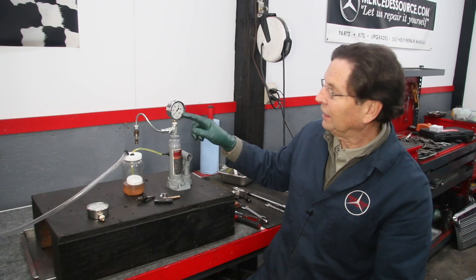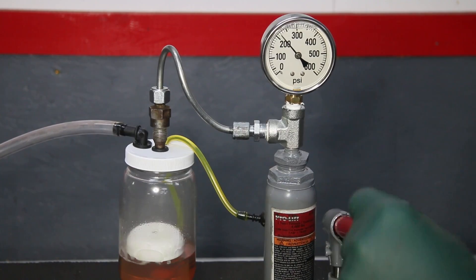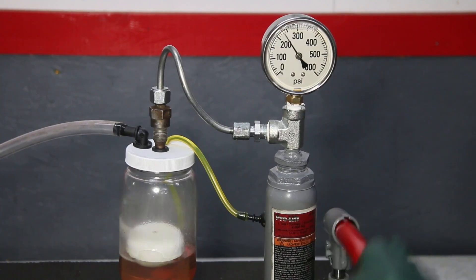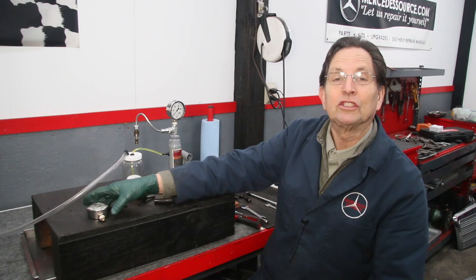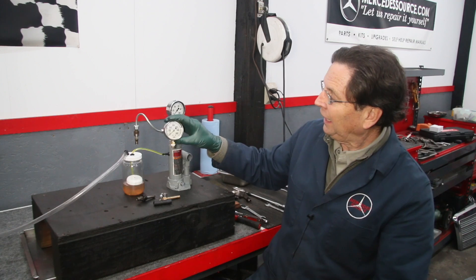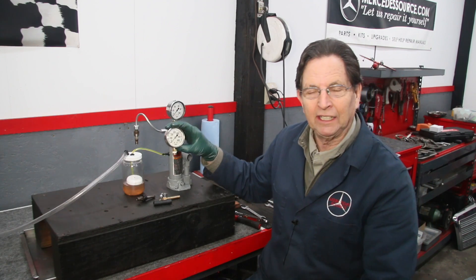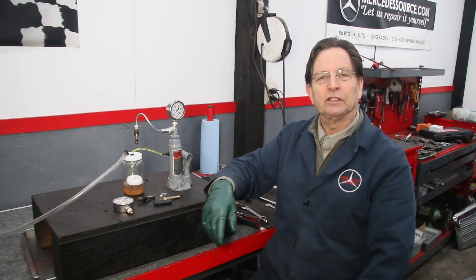But the problem is 100 PSI is not enough because these generally release pressure at about 240 to 260 PSI. So in that kit, I include a 600 PSI gauge, which will allow you to test these early fuel injectors.